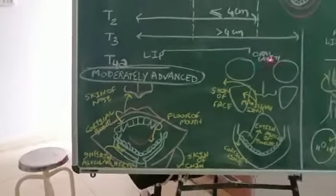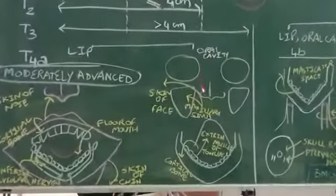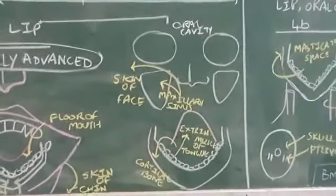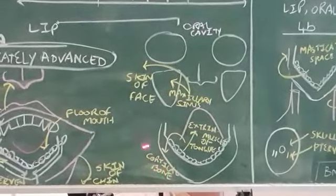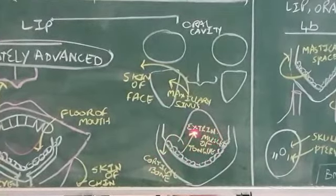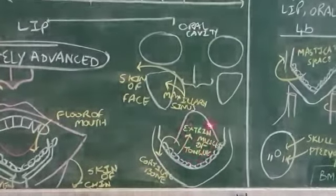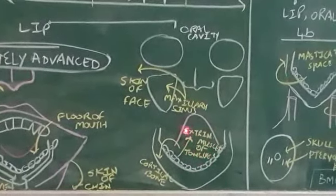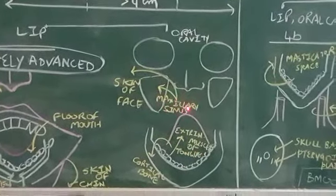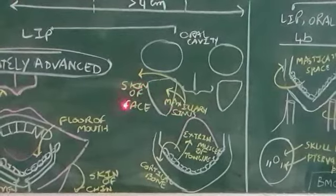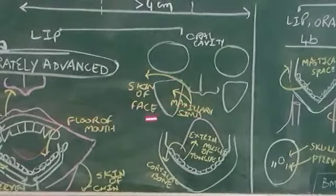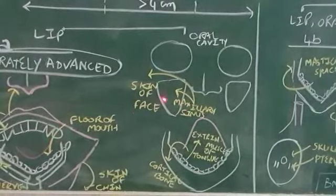If you take moderately advanced in oral cavity, it goes once again towards the cortical bone. Cortical bone here also common, here also common. And because it is oral cavity, you have to go for a soft tissue like extrinsic muscles of the tongue, deep extrinsic muscles of the tongue. And it is going towards the maxillary sinus. Maxillary sinus and skin of the face. Skin of the face. Here it is skin of the nose, here it is skin of the face. Of course, these are all arbitrary divisions. That is T4A.